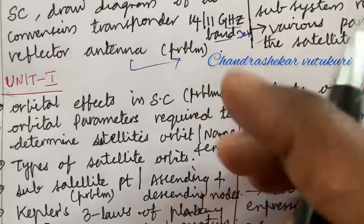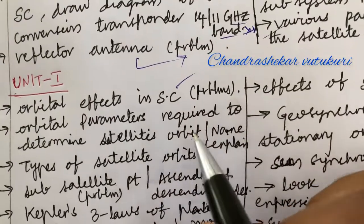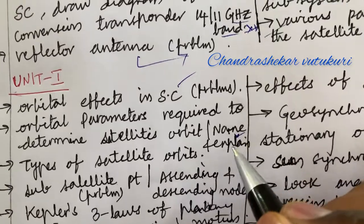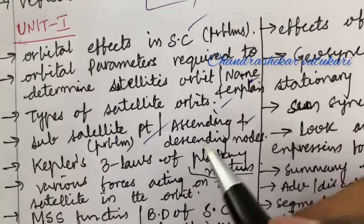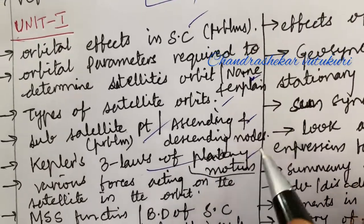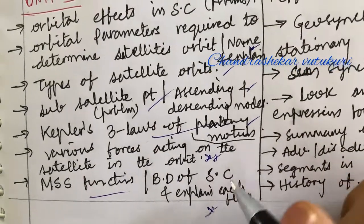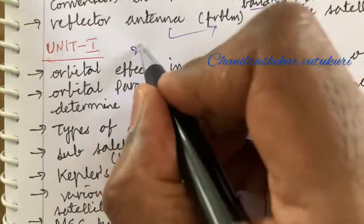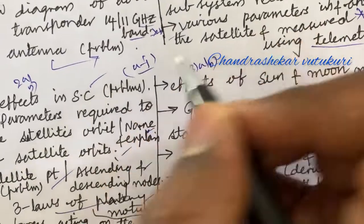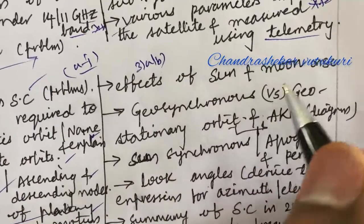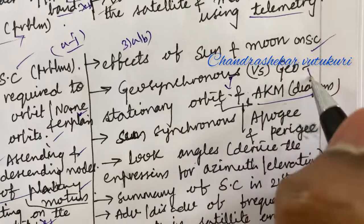Dear students, do focus on Unit 1 as well. It covers the introduction, orbital effects in satellite communication, and problems. Orbital parameters required to determine a satellite's orbit — name and explain them. Types of satellite orbits, subsatellite point and the related problem, ascending and descending nodes — set as top questions. Kepler's three laws of planetary motion, various forces acting on the satellite in orbit, and the NMS function and block diagram of the spacecraft — explain each block. These are the short and long questions covering questions 2a/2b as well as 3a/3b.